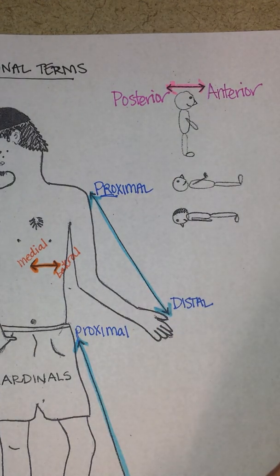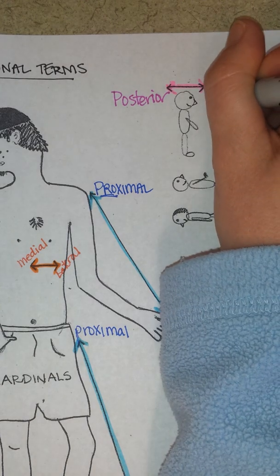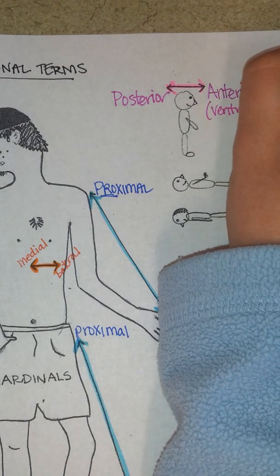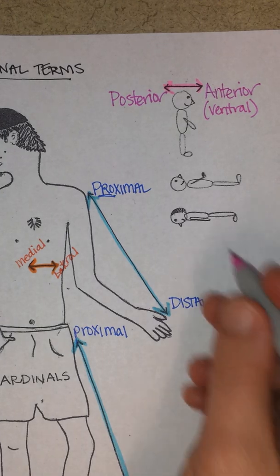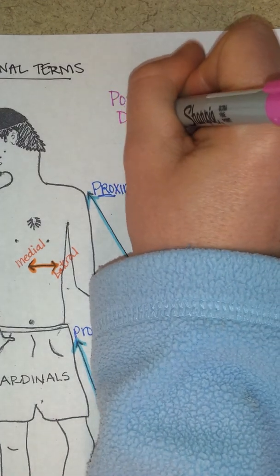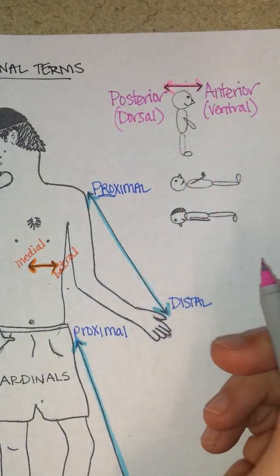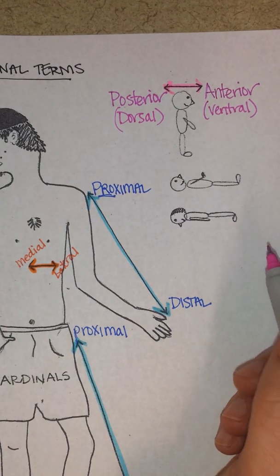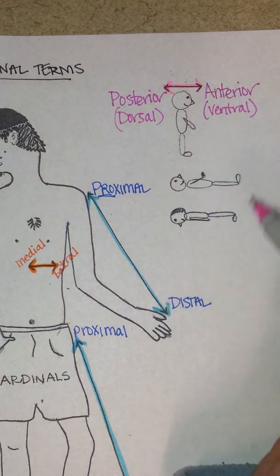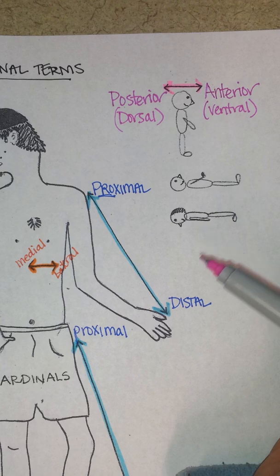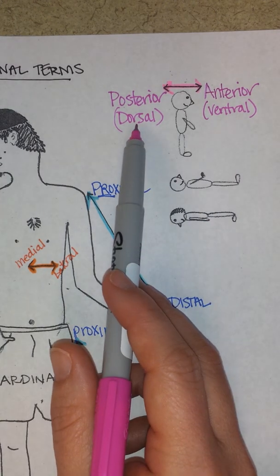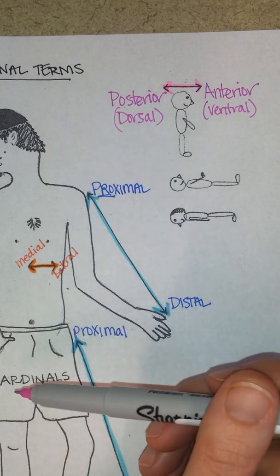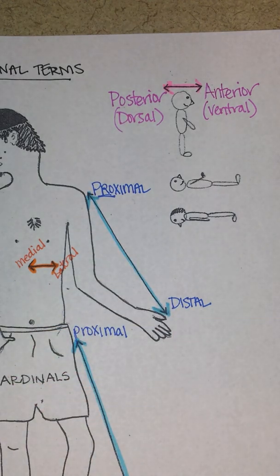A couple of similar terms: ventral refers to toward the front or the belly, and dorsal refers to toward the back. This comes up with the spinal cord — the ventral or anterior parts of the spinal cord are where motor output goes to make your muscles move, and the dorsal or posterior sides of the spinal cord are where sensory information comes in.